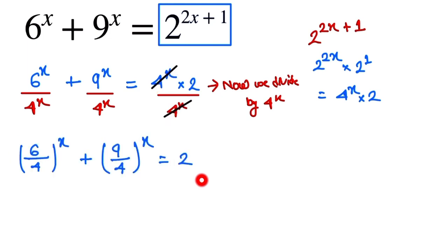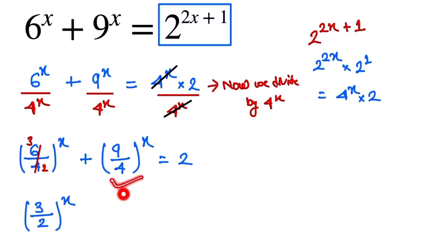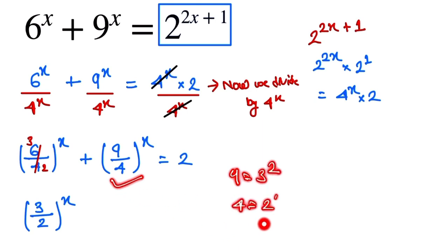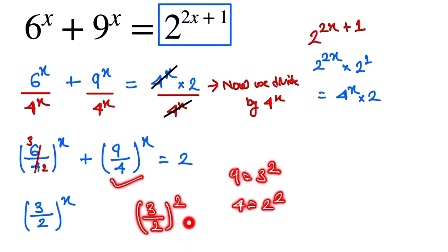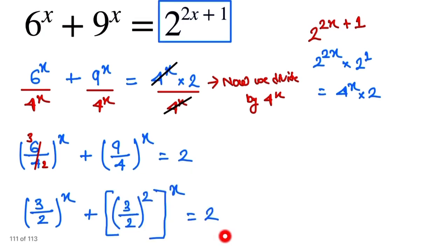Here, 6 by 4 simplifies to 3 by 2 to the whole power x. And 9 can be written as 3 squared, and 4 can be written as 2 squared, so 9 by 4 becomes 3 by 2 the whole power 2, then to the power x. So we have 3 by 2 to the power x plus 3 by 2 to the power 2x is equal to 2.